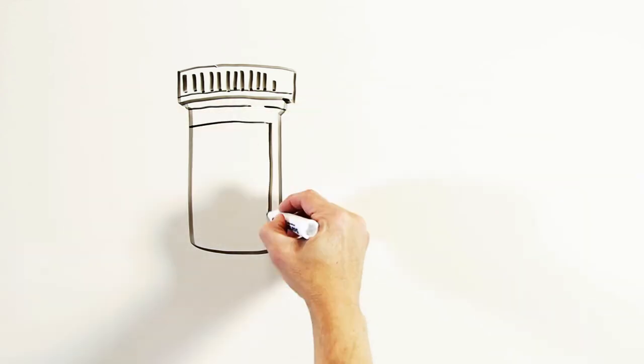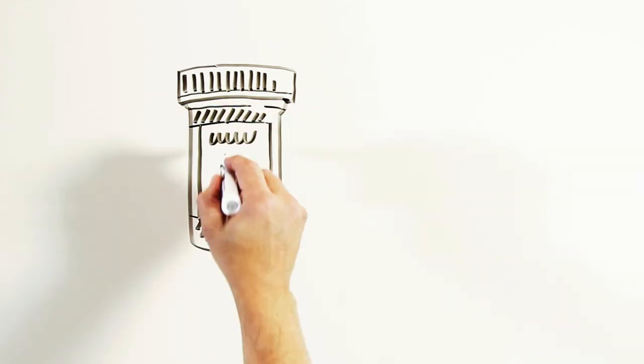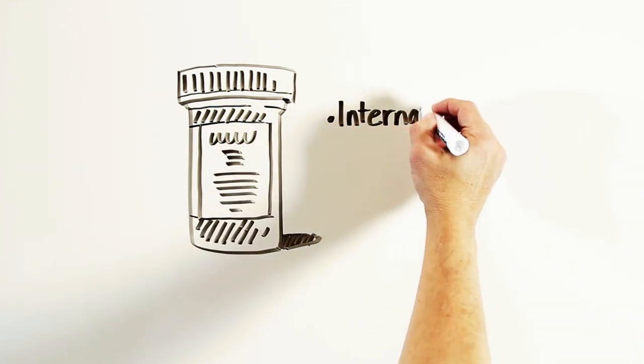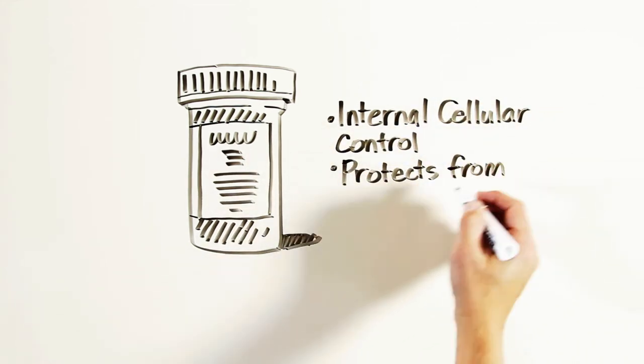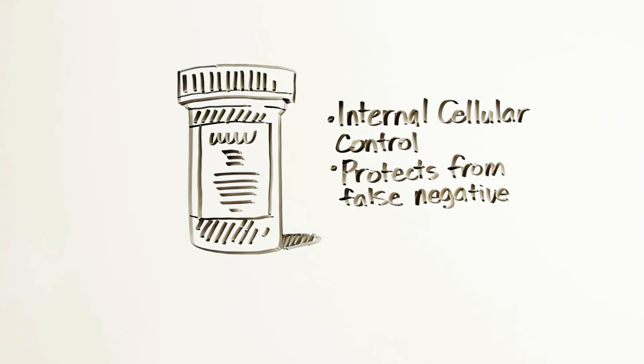To ensure confidence in an HPV test result, both Australia and the Netherlands determined that having an internal cellular control is a mandatory requirement. This way, women can be reassured that their results are reliable, since there are enough cells with DNA to accurately test the sample.